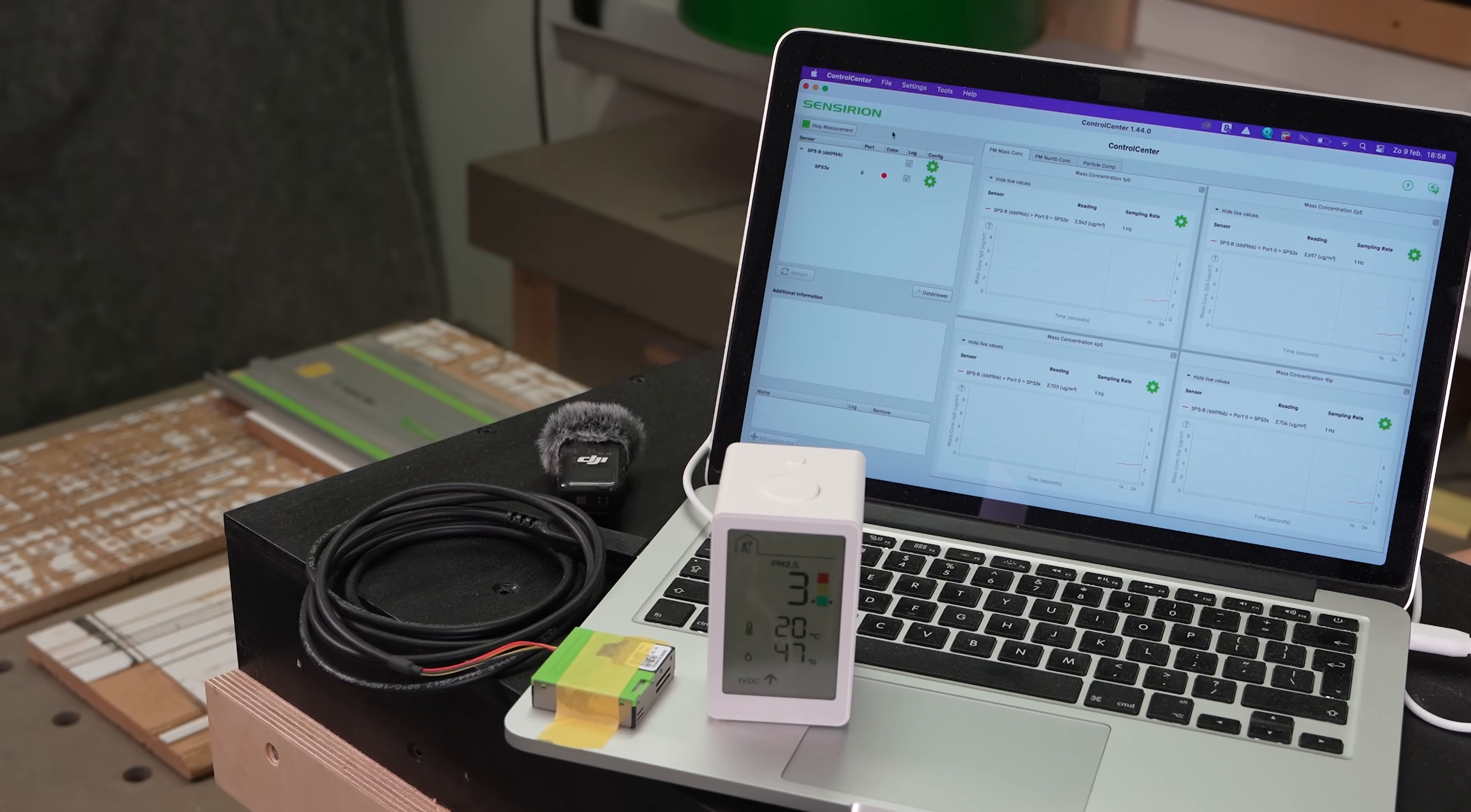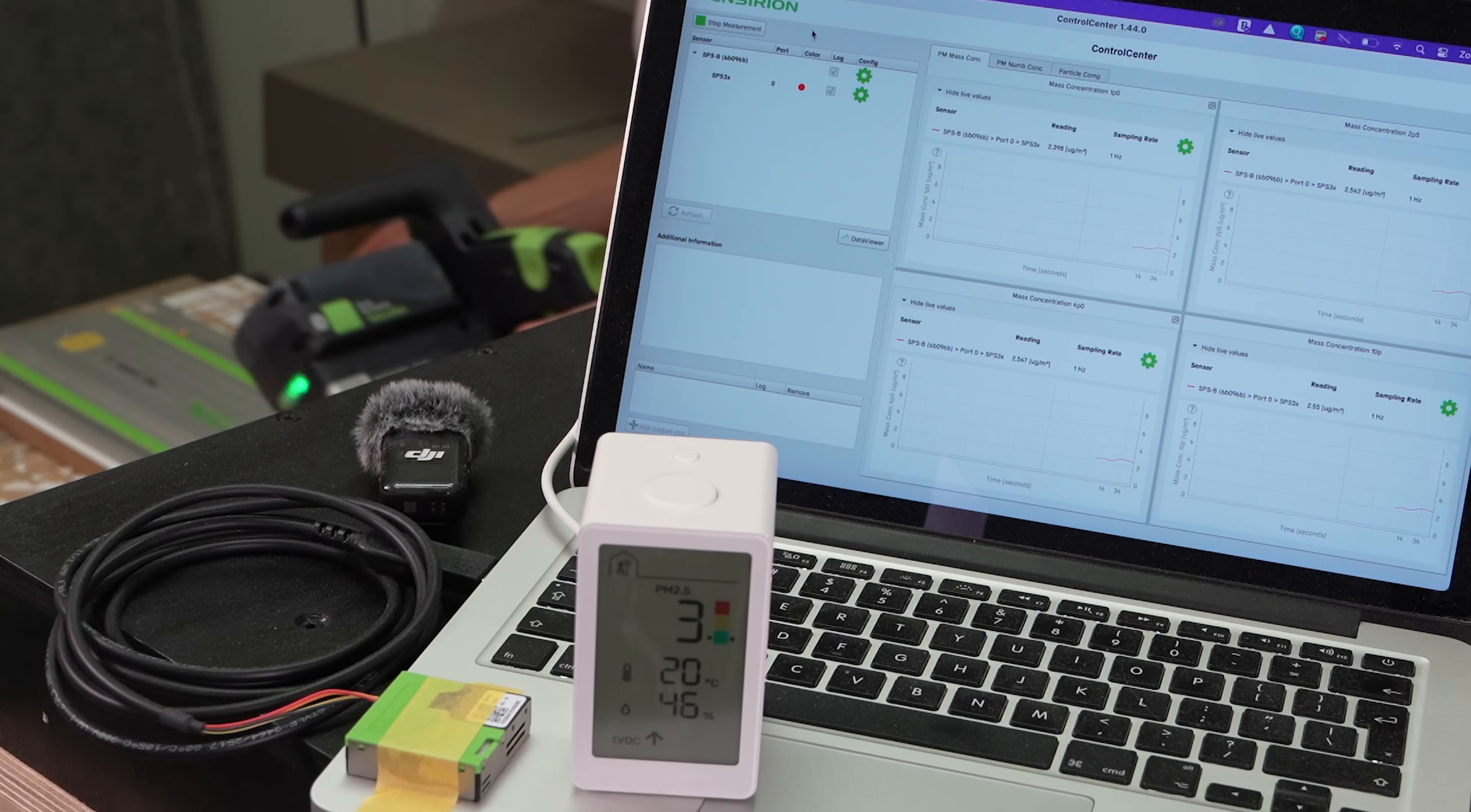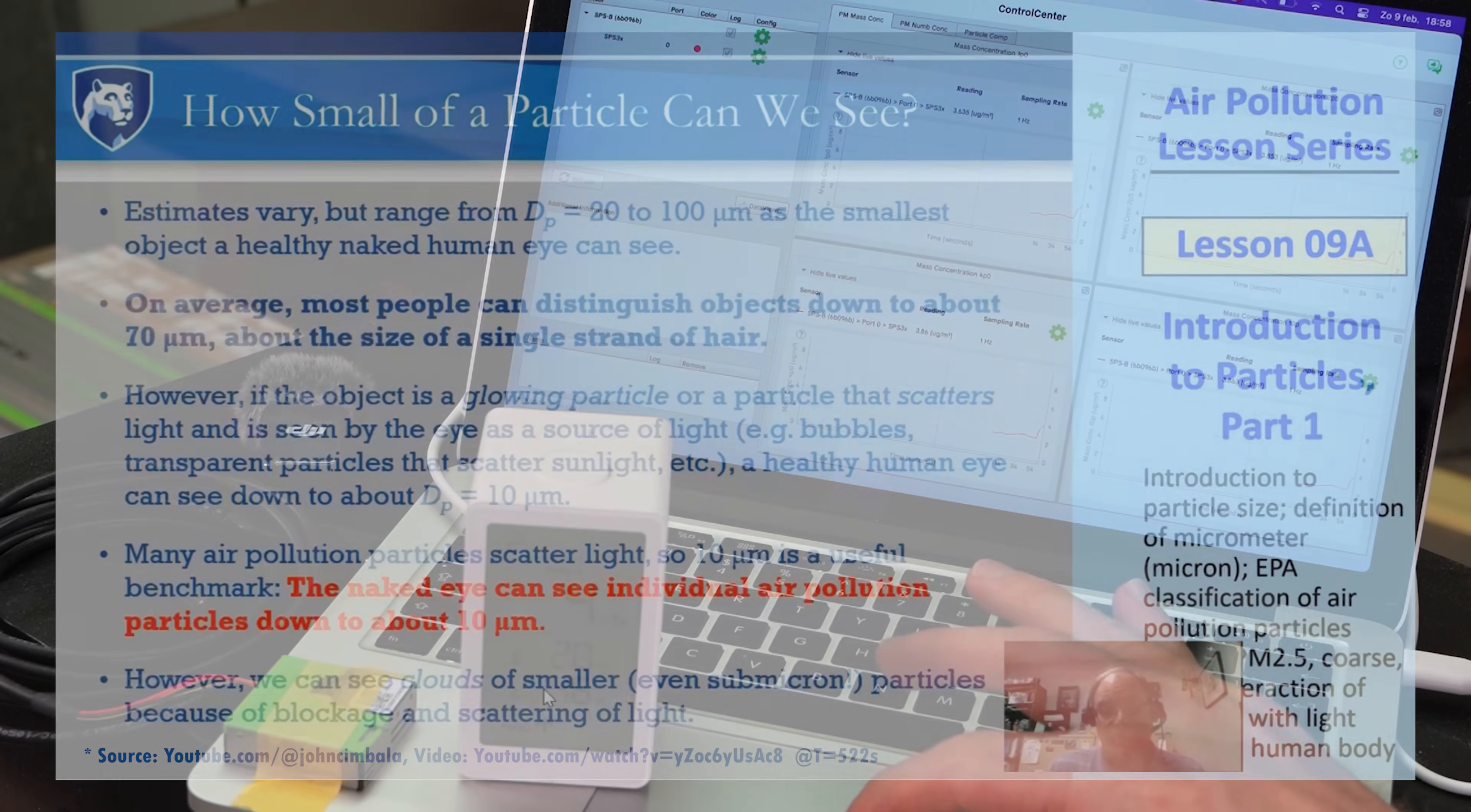Now the dust is clearly visible. A portion of them would be bigger than 10 micron. The human eye can see a single particle down to 10 micron when it scatters light. And when clouds of dust scattering light, you would be able to see even submicron particles.